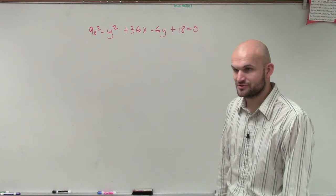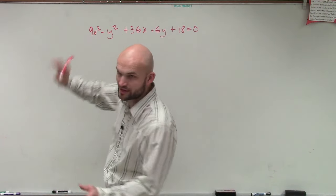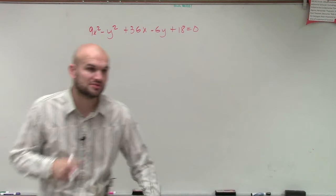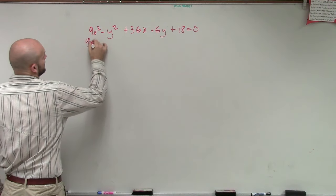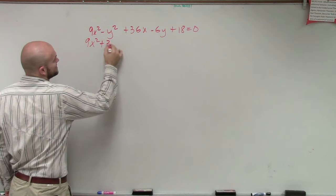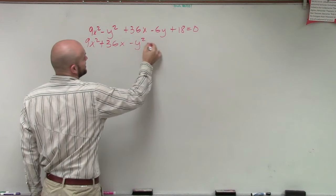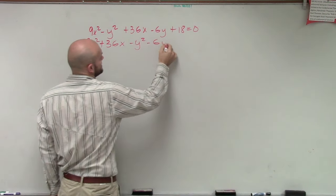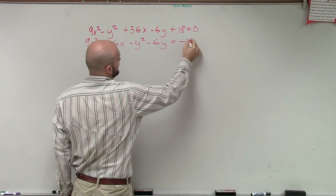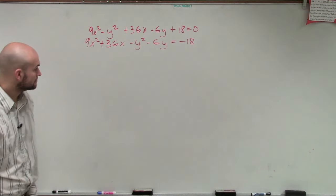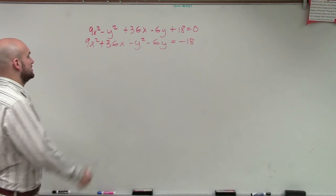And we've been familiar with that by completing the square. So the first thing we're going to want to do is rearrange my variables so they're next to each other. So I have 9x squared plus 36x minus y squared minus 6y equals negative 18. Then I'm going to have to complete the square for each one of these.